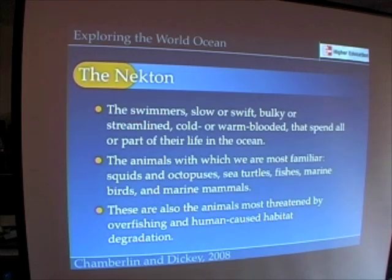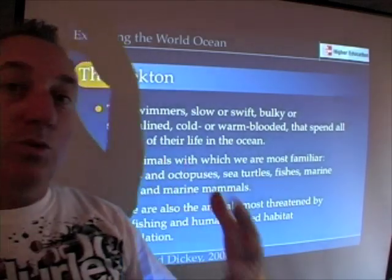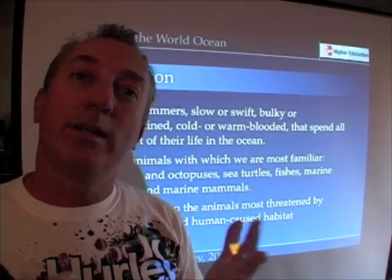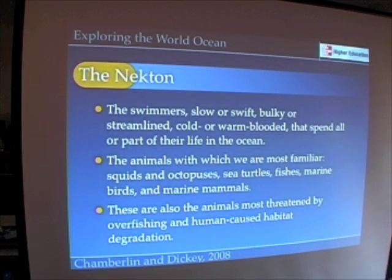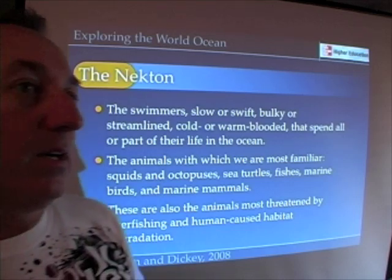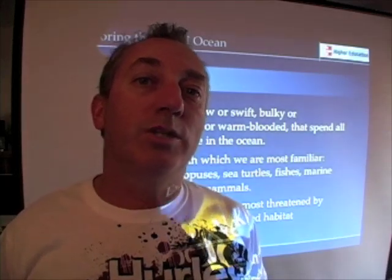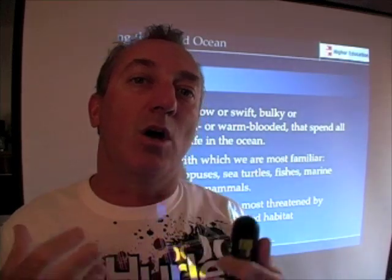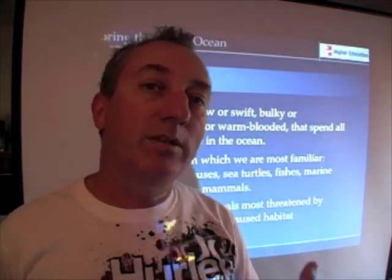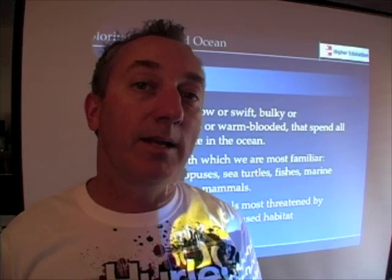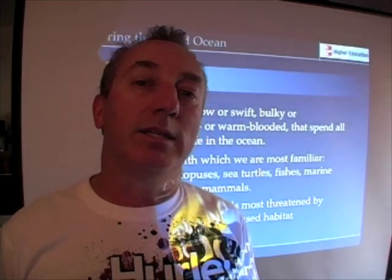The necton are the swimmers — things that actually move against the water. They may be fast or slow, bulky or streamlined, cold or warm-blooded, but they move against the currents. They include most of the animals we're familiar with: squids and octopuses, sea turtles, fishes, marine birds, and marine mammals. Because of their large size and meatiness, the necton are generally the most endangered in the ocean — we overexploit them and alter their habitats, making them the most impacted by human activities.